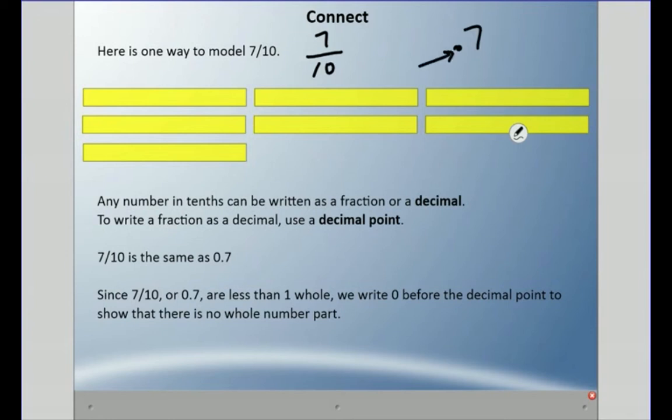If you were to write just 0.7 and you use the period on your keyboard, that is really small usually. If you don't write a 0 in front of it, it's really hard to catch sometimes. So it's very important that you do write the 0 for the ones place.